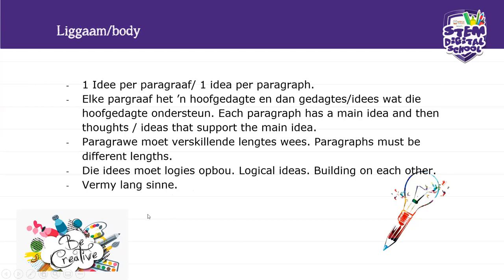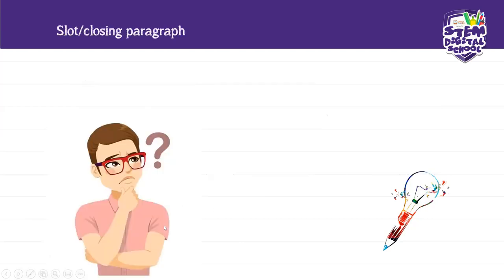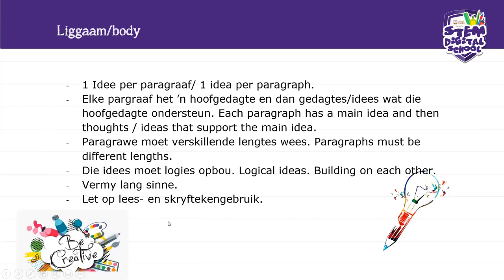For the body of the essay: one idea per paragraph. Each paragraph has a main idea, and the supporting thoughts and ideas that relate to that main idea belong in the same paragraph. Paragraphs must be of different lengths to keep the reader's eye engaged. Ideas should build logically on each other. Don't write sentences that run over four or five lines — keep ideas clear. Use punctuation.